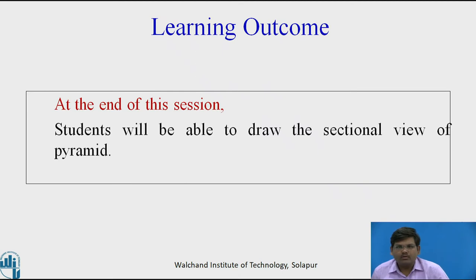As we all know, a pyramid is a type of polyhedron which has triangular faces, it has vertical edges, it has edges at the base. The base is of the given polygon — either it be a pentagonal pyramid, a hexagonal, a square pyramid or a triangular pyramid — and at the top it has an apex point.